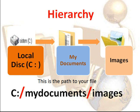We need to know where we saved our images on our computer. So let's say we saved them on local disk C, in the folder My Documents. Inside of My Documents we have an Images folder. This would be the path to your file: C colon forward slash My Documents forward slash Images.